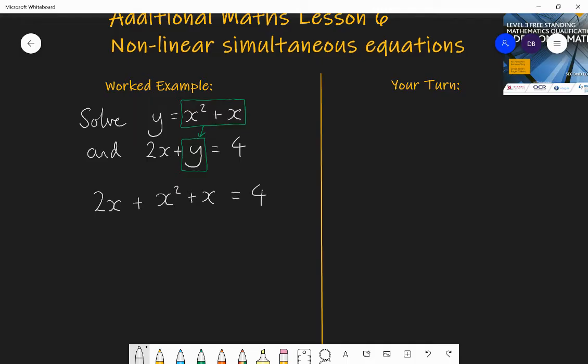And that gives me a new line where I write the second equation out again: 2x plus, and instead of writing y, I write what y is equal to. I will write x squared plus x, and that is equal to 4. So all I've done is I've rewritten the second equation with the information from the first equation substituted in. Now I've got an equation with just x's in, and that is something I am able to solve. This quadratic equation. I'm going to make one of the sides equal to 0 and solve it using either factorization, quadratic formula, or completing the square.